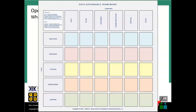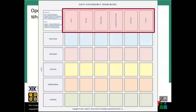The data governance framework takes core components — data, roles, processes, communications, tools, metrics — across the top of a matrix, and looks at the organization from the executive strategic level all the way down to the operational and support levels. We want to make sure that when we're defining and designing our program, we align these roles and processes with the purpose. What are we trying to achieve? What are we trying to prove with our data governance program, and how are we intending to demonstrate value to the organization?